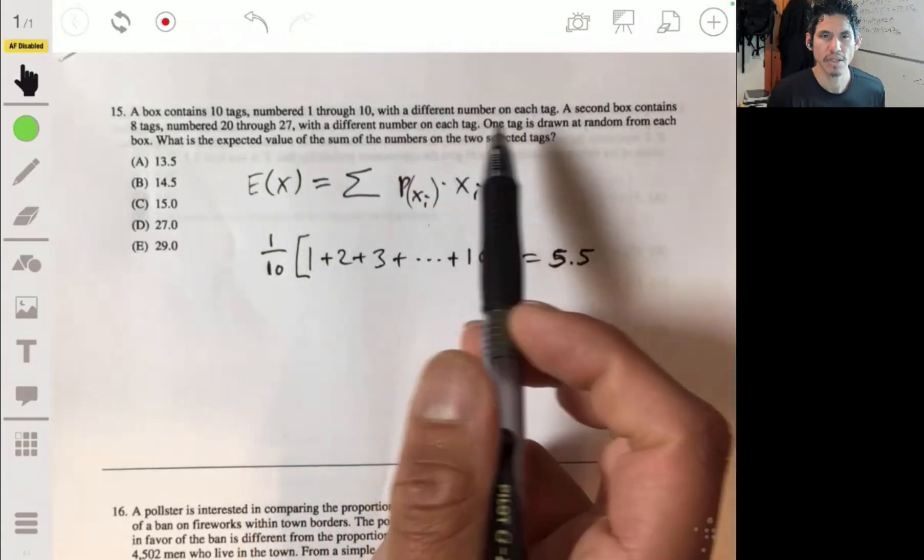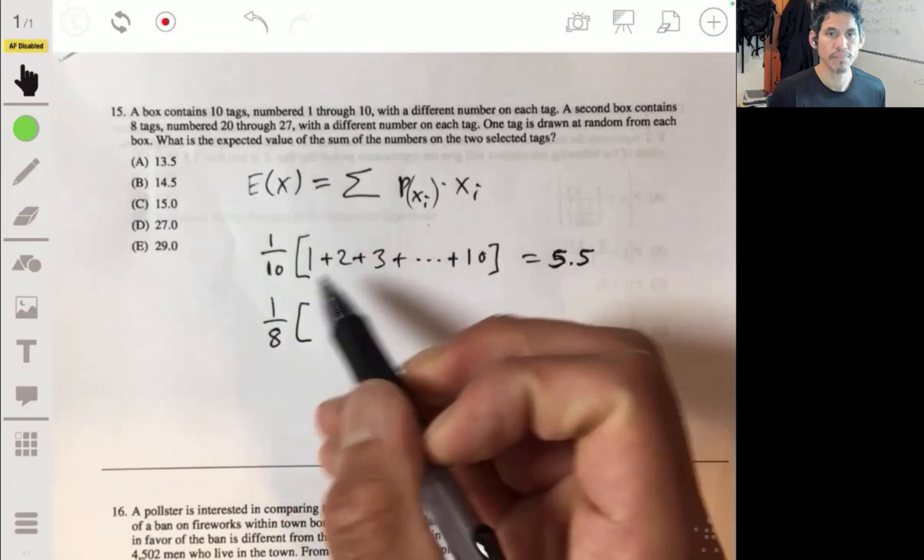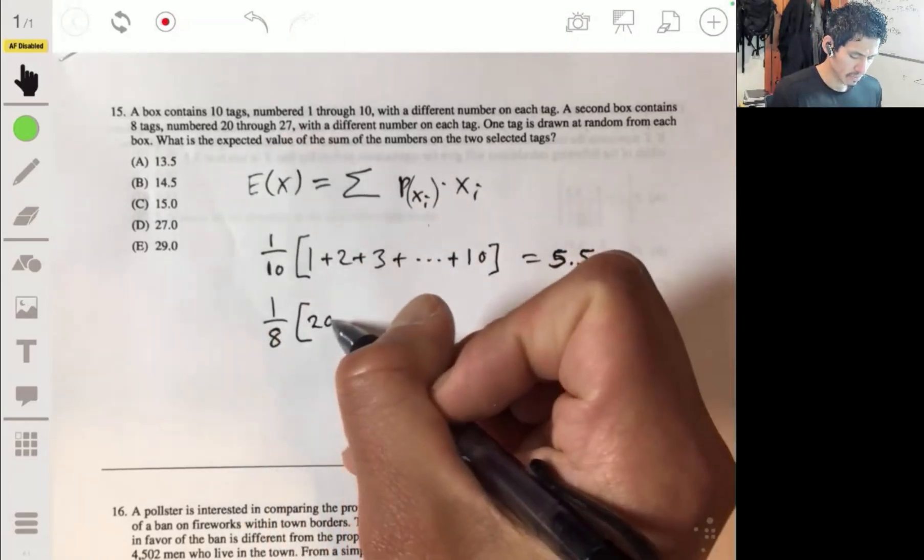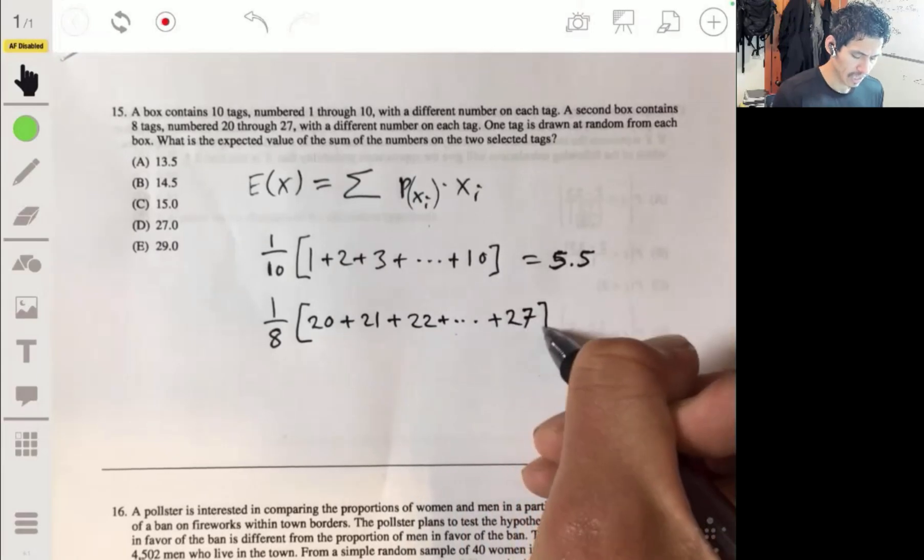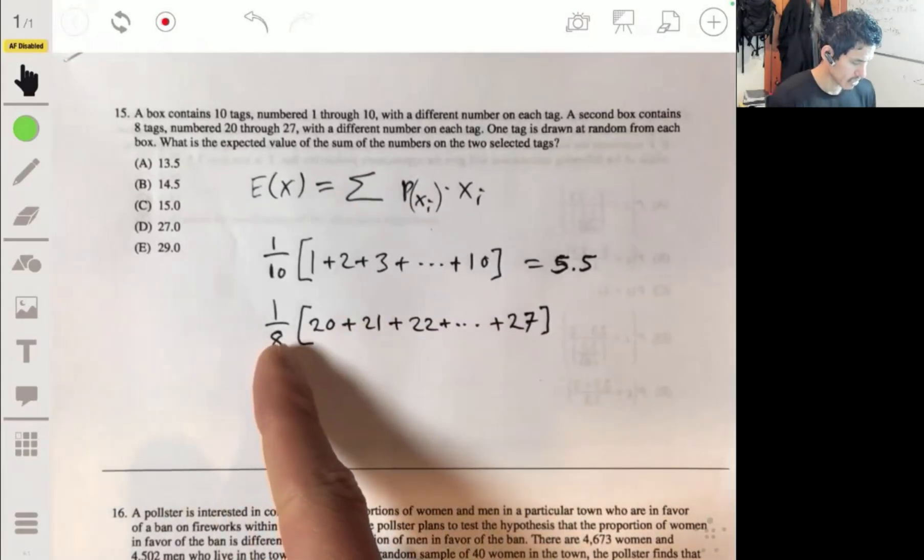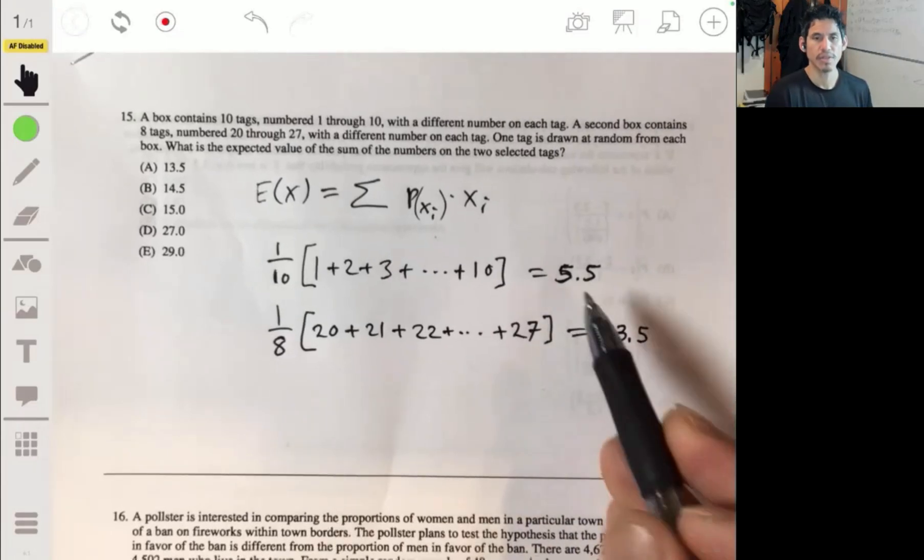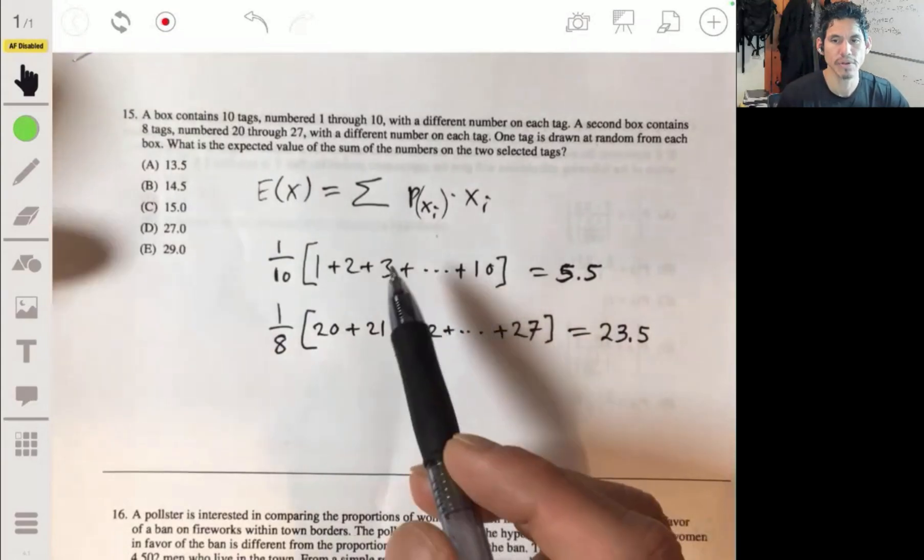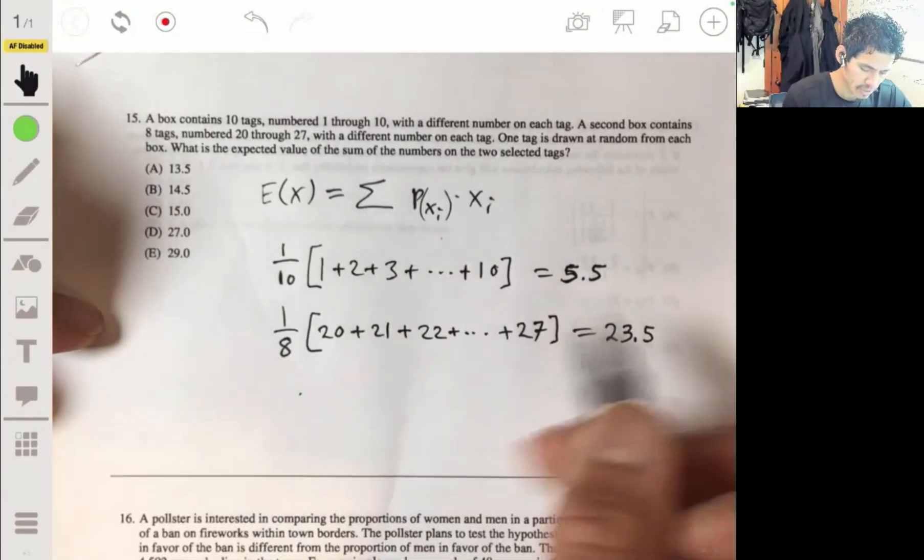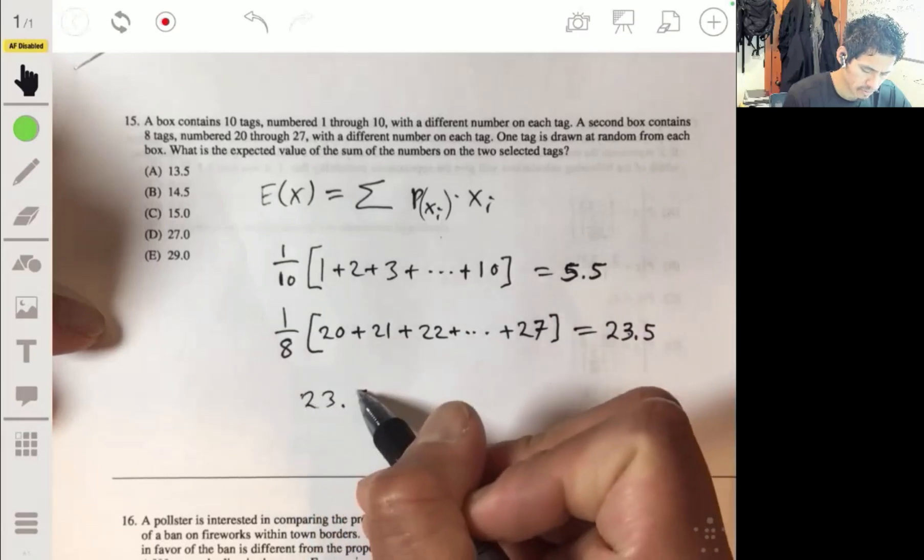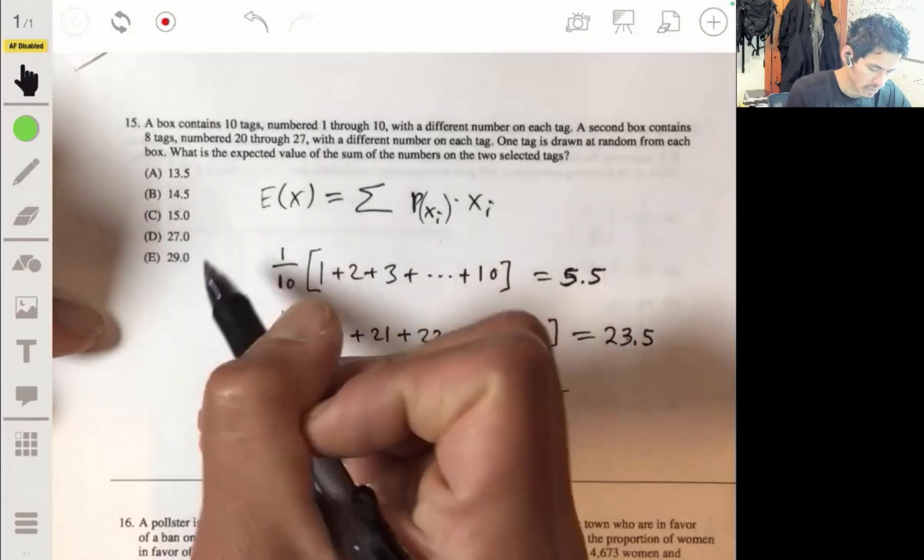This will be the expected value for the first box. Now for the second box, you have eight tags, so each is going to have a probability of 1/8. You have numbers 20 through 27. You're going to multiply the sum of these numbers by 1/8, and you'll get 23.5. So the expected value of the sum of these two tags will just be adding those together: 23.5 plus 5.5 gives you 29. And so the answer is E.